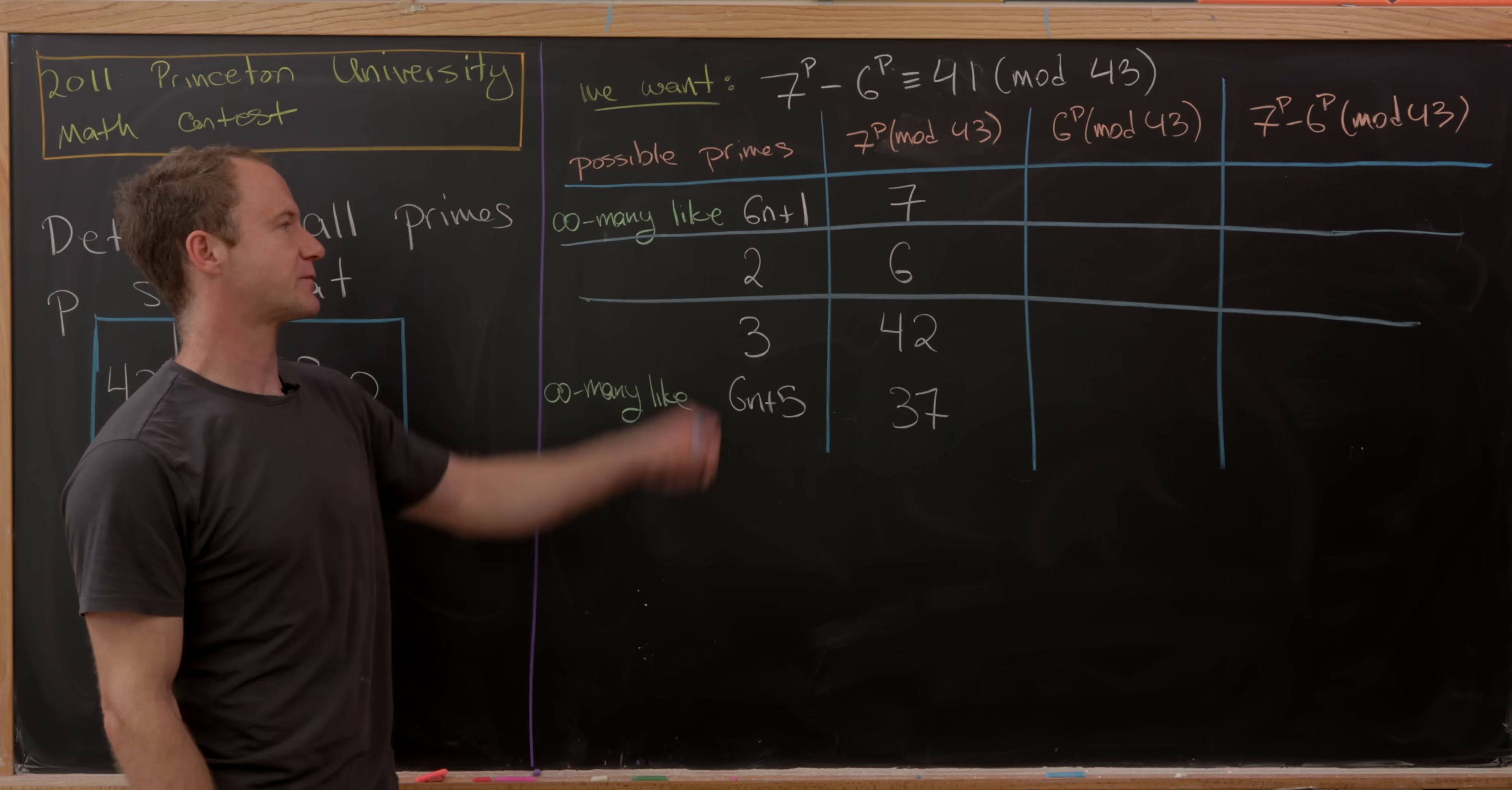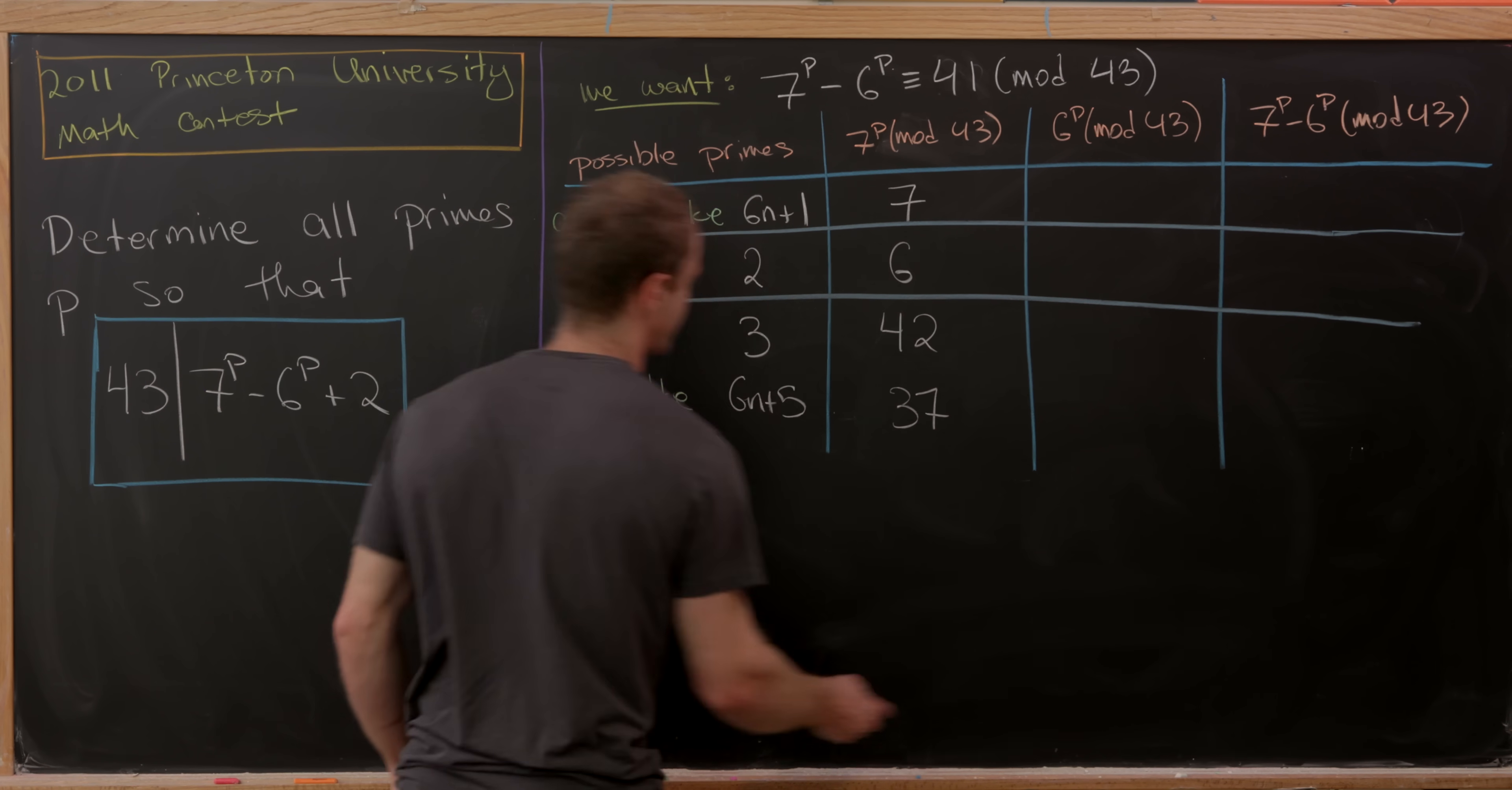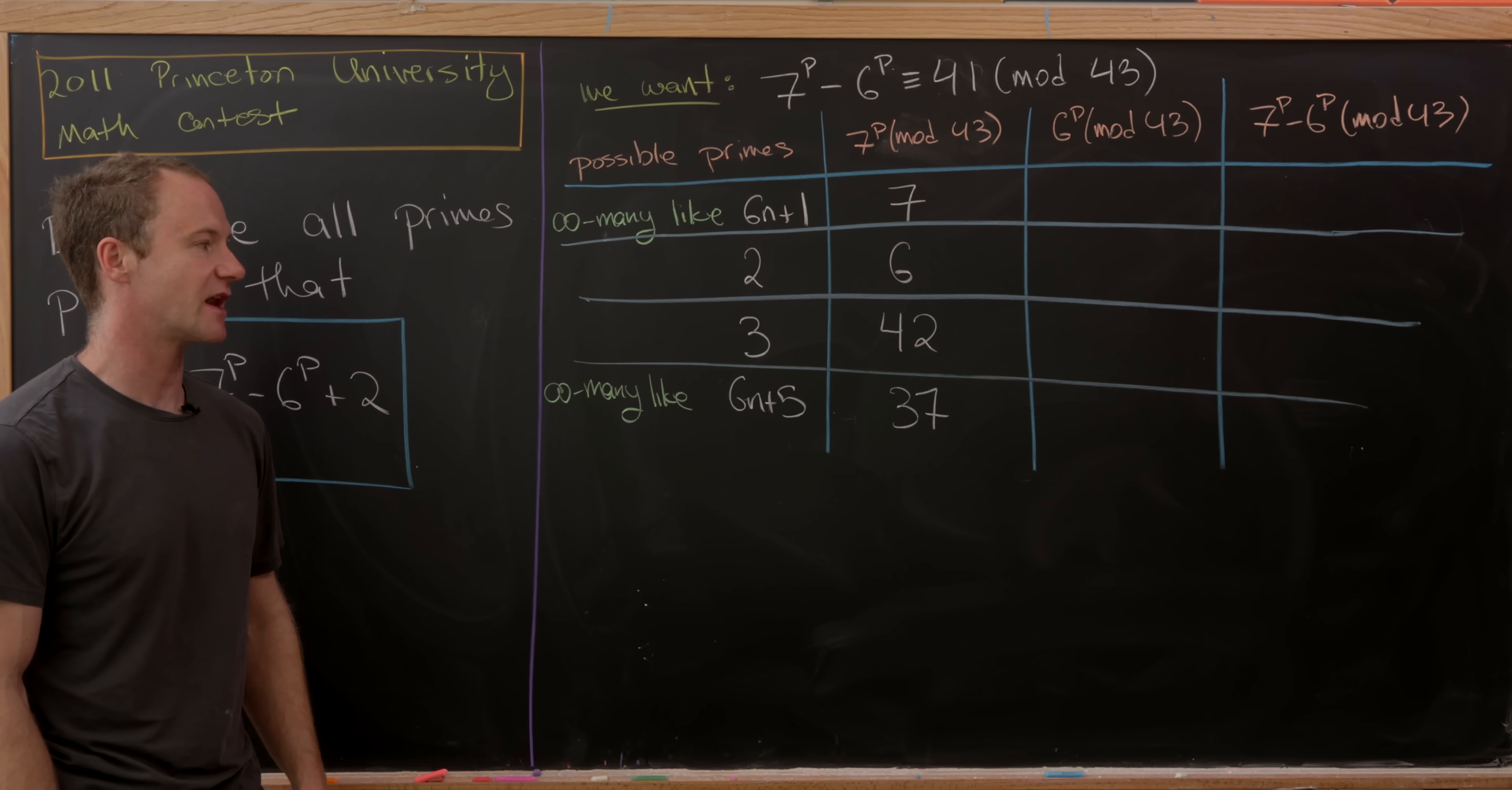When p was a prime of the form 6n+1, we got 7. When p was equal to 2, we got 6. When p was equal to 3, we got 42. And when p was of the form 6n+5, we got 37. Now let's work at 6^p in these cases.